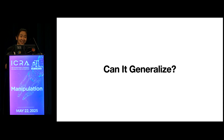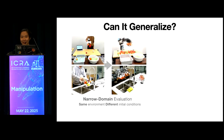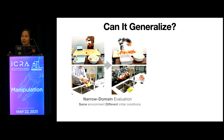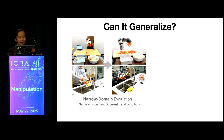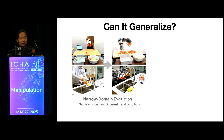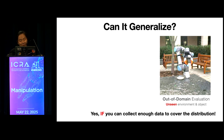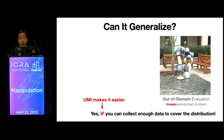The next question is: can the learned policy generalize? All the demos I've shown so far represent what we call narrow domain evaluation — evaluating the robot in the same environment where training data was collected, with only the object initial configurations varying. The more important question is whether the robot can still work in a new environment. The short answer is yes, but with a really big 'if': if you can collect enough data to cover all the distributions. UMI can help make it slightly easier to satisfy this condition.